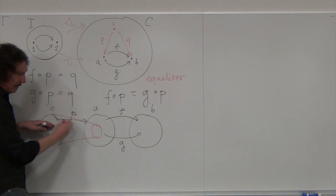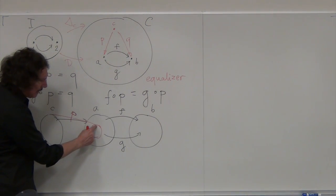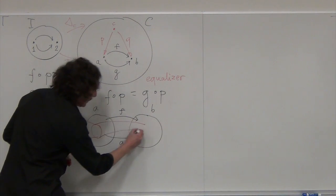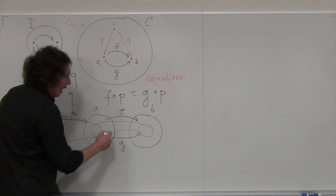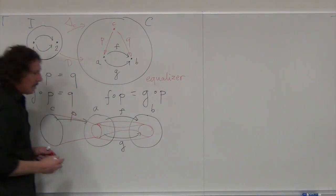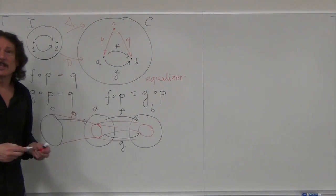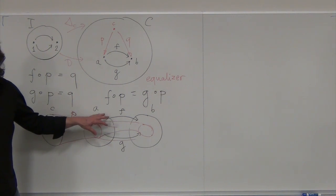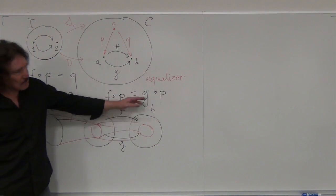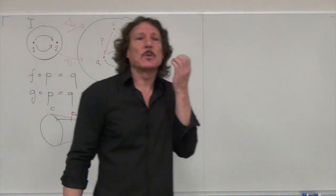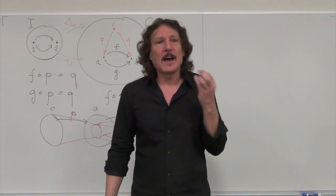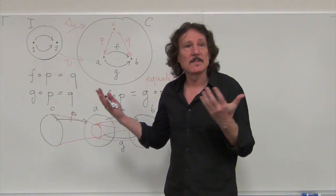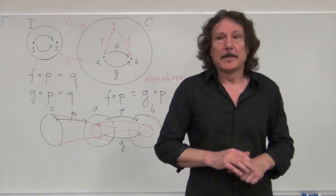Following one function with another means we are only looking at the action of F on the subset that is the image of P. F maps it into something, and G maps it into something, and they have to be equal. So the equalizer picks a subset of A on which these two functions are equal — it's solving an equation. For what values are F and G equal?